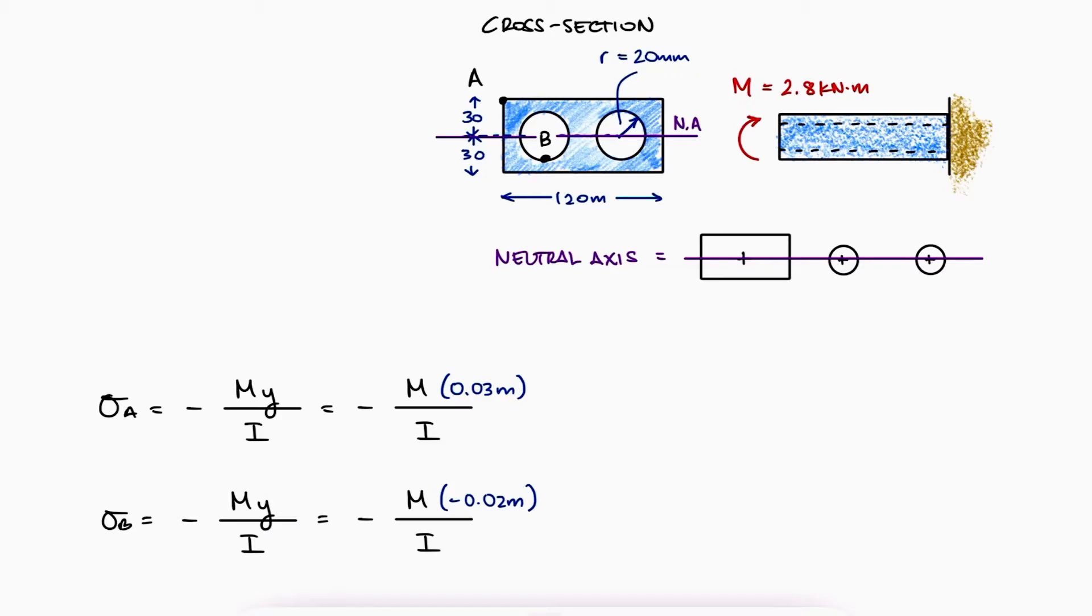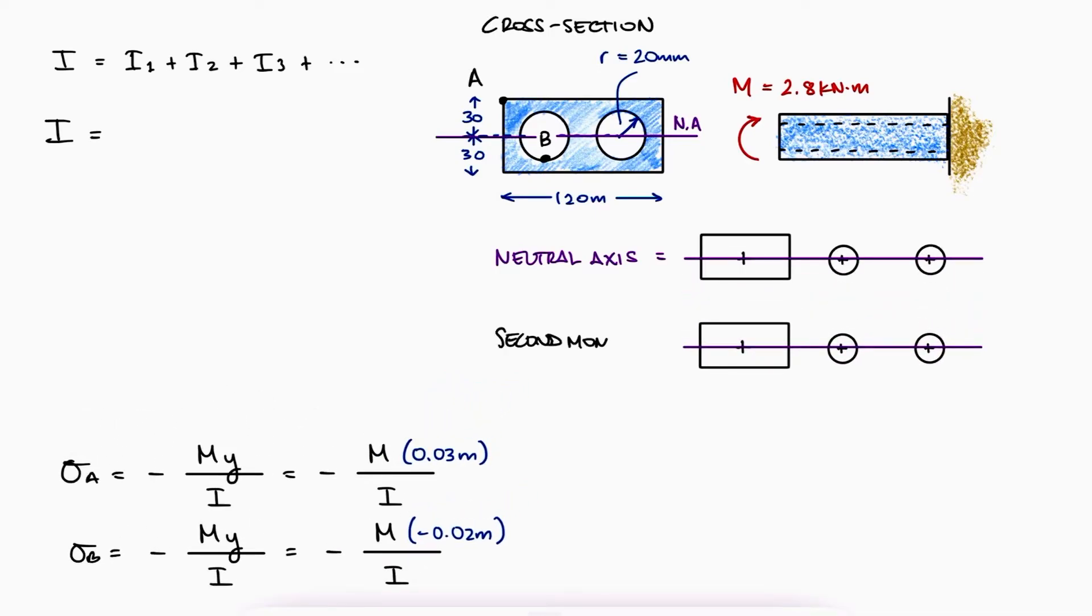The second moment of area of that cross section will be the sum of the second moments of area of each simple shape, or in this case, where material is removed to create the two circular holes, the subtraction of the second moments of area.